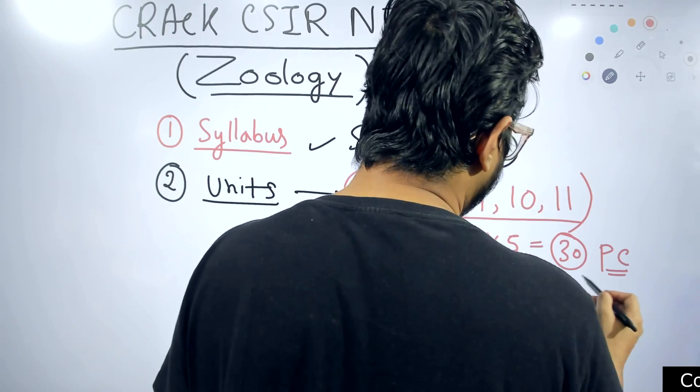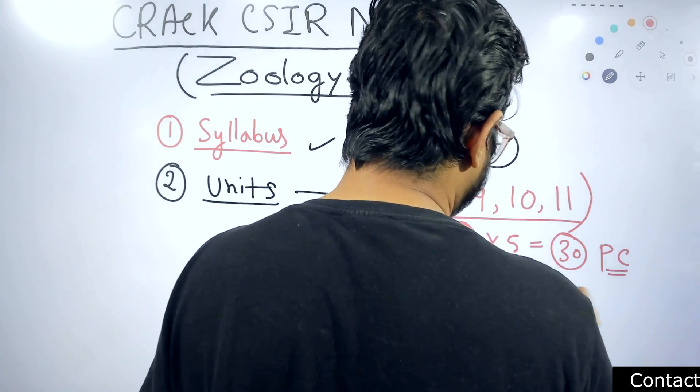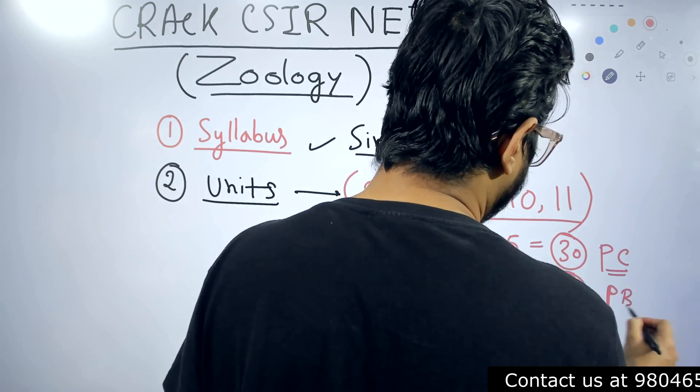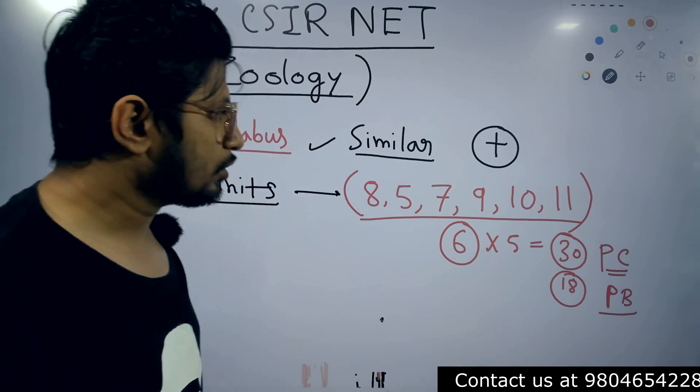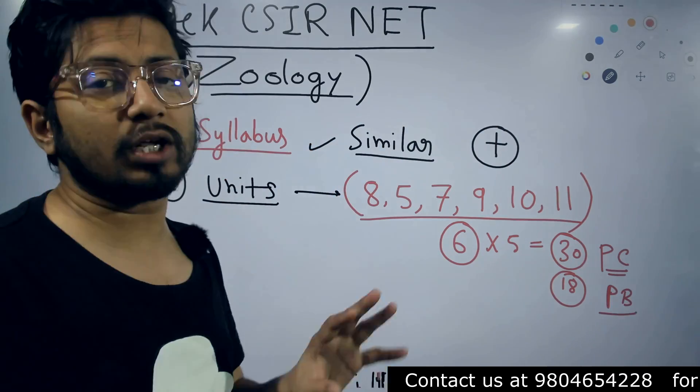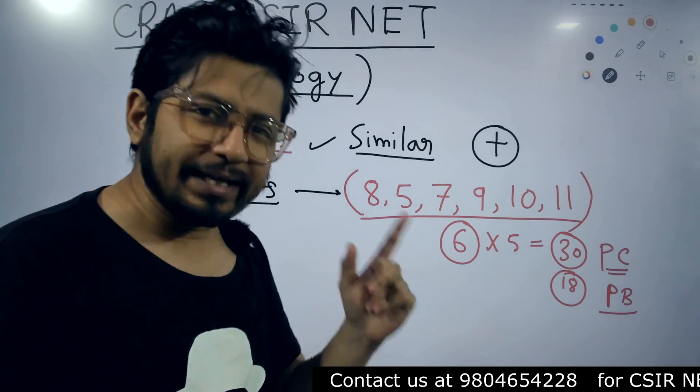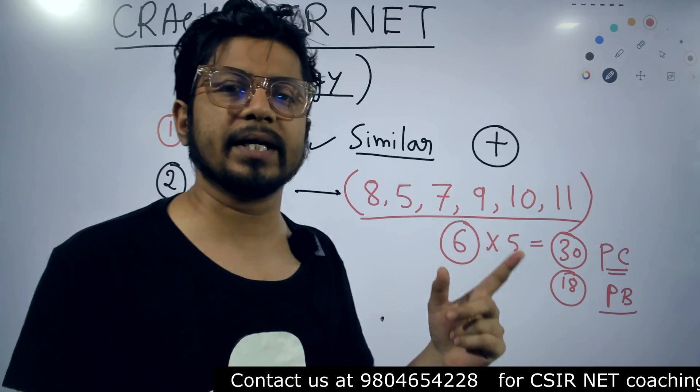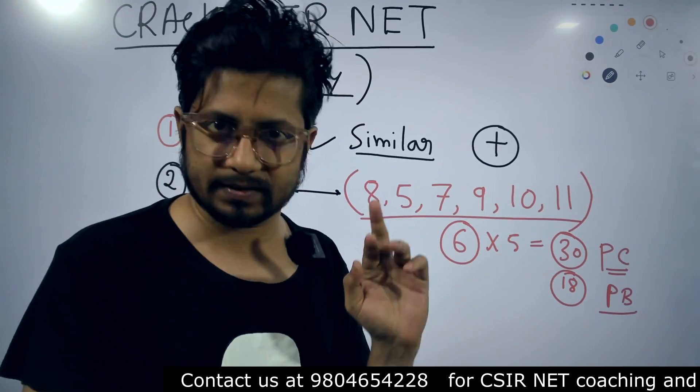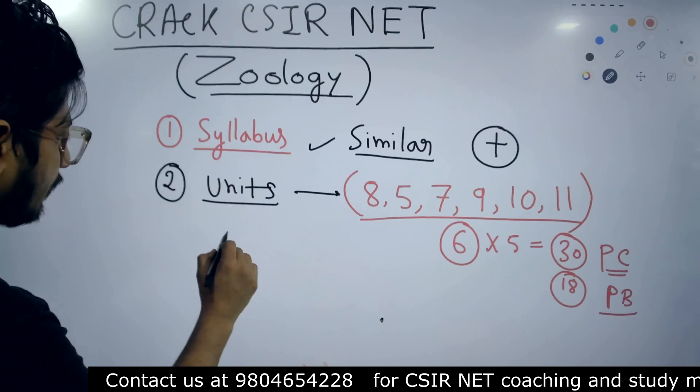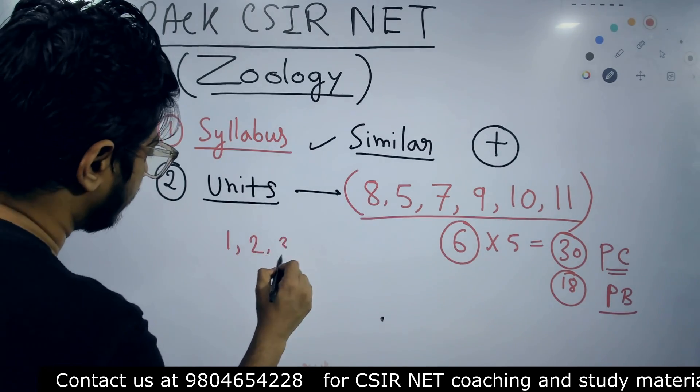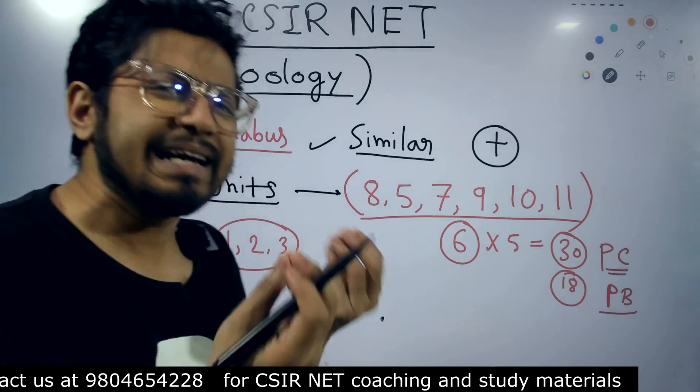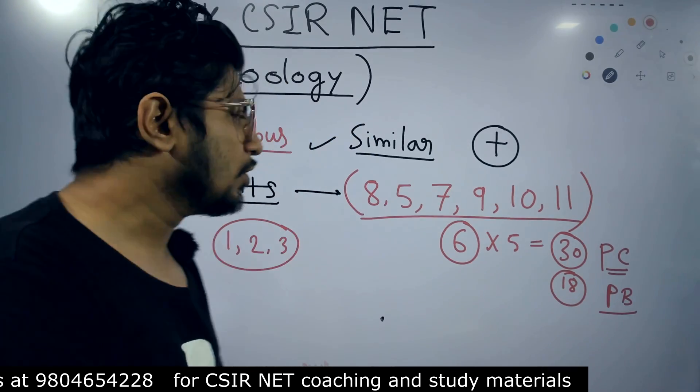Also, approximately 18 questions in Part B you can expect, 18 to 20 questions from this zoology background. But I believe in zoology syllabus you have already read and prepared biochemistry parts, cell biology, molecular biology, so those are the subjects like Unit 1, Unit 2, and Unit 3 that you are still a little bit aware of.